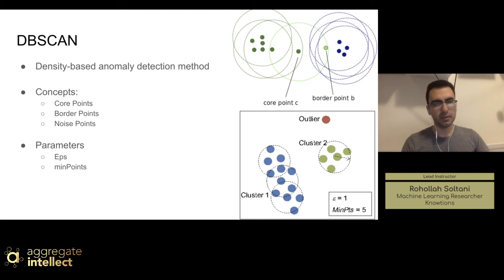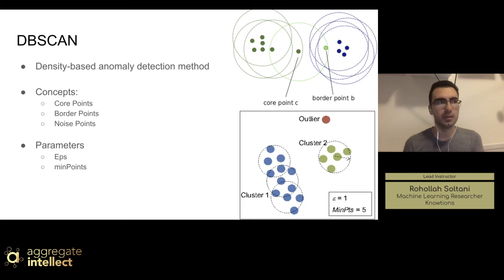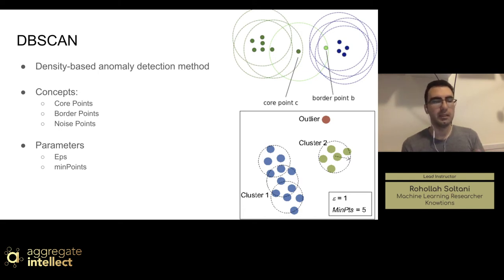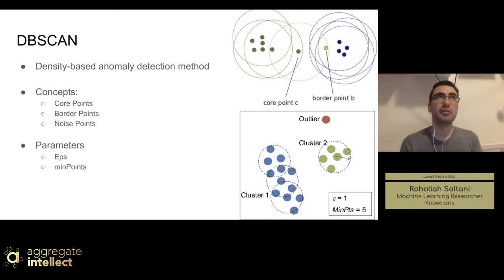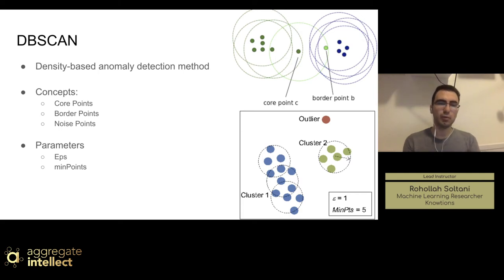DBSCAN has its own challenges, similar to k-means. First, what is the best epsilon? If it's too small, a large part of the data will not be clustered and will be considered outliers because they don't satisfy the minimum number of points to create a dense region. On the other hand, if the value is too high, clusters will merge and the majority of objects will be in the same cluster — similar to k-means if k is too large or too small. And finding the best minimum points is another hyperparameter you have to define.